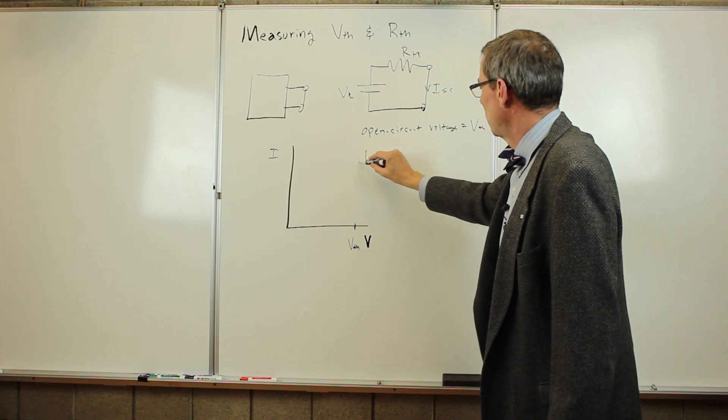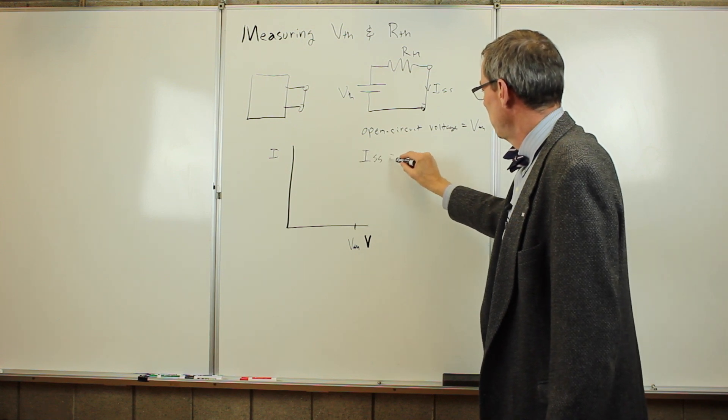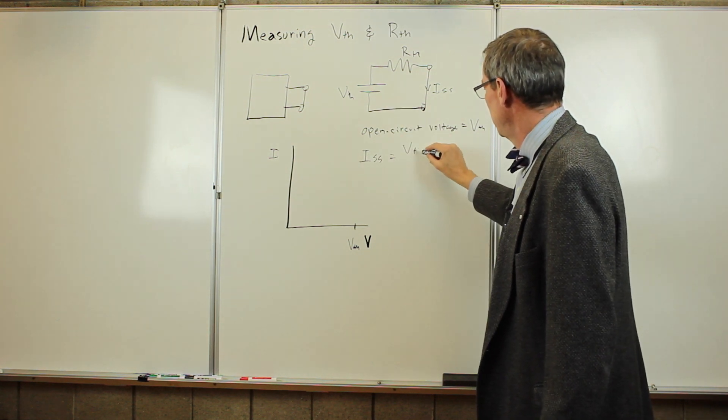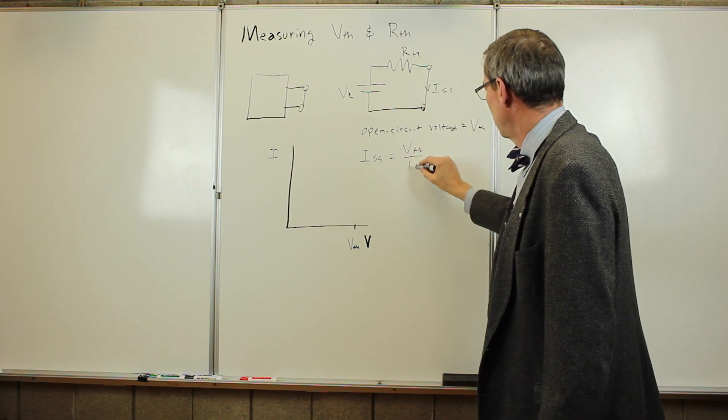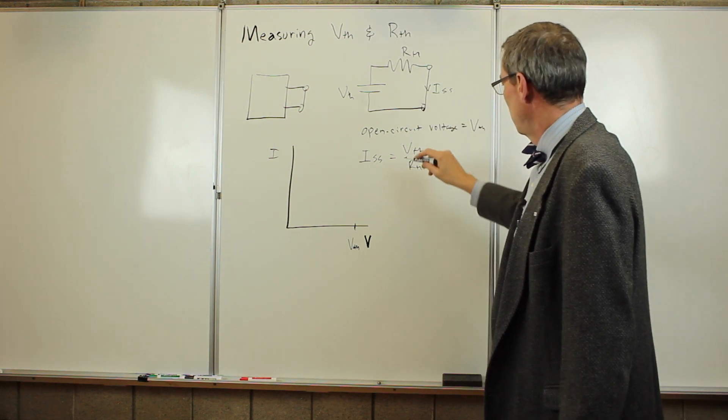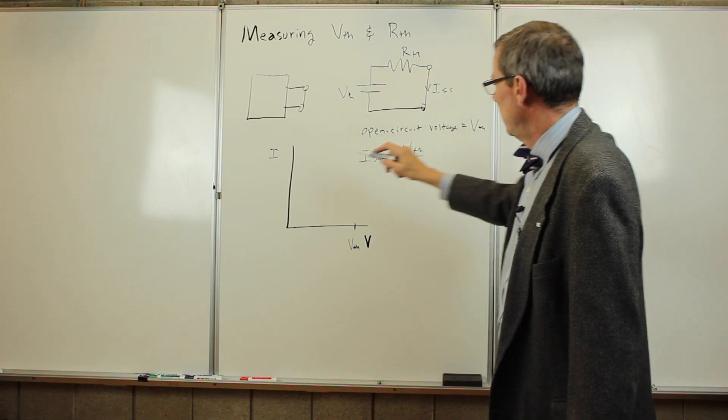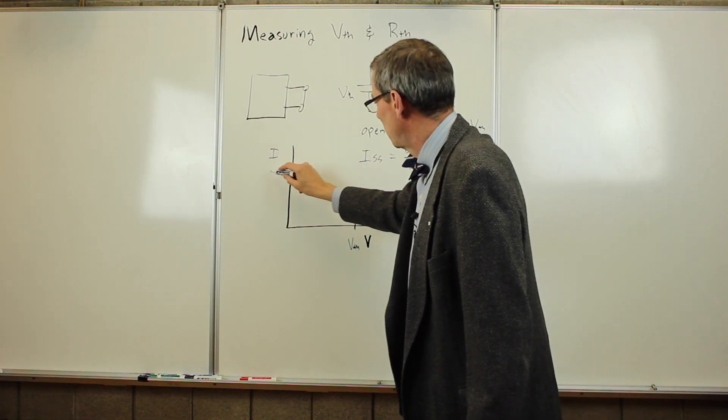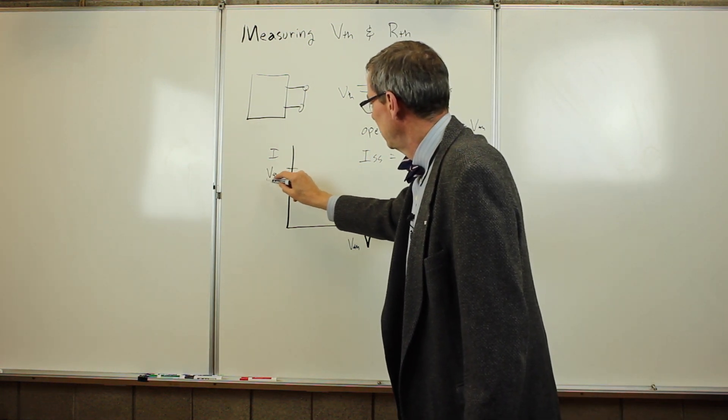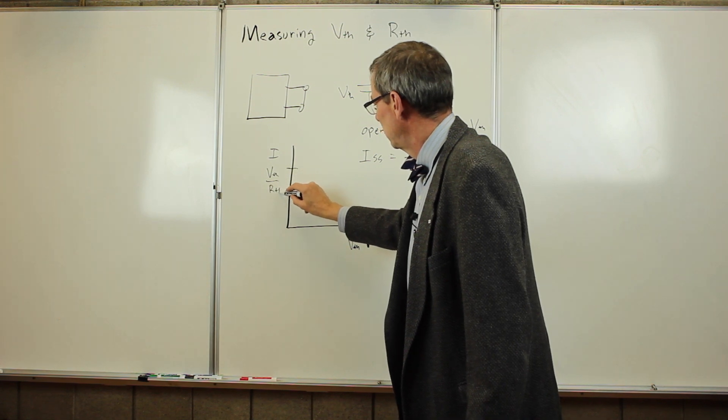And that short circuit current is going to be the voltage, V Thevenin, divided by the resistance, R Thevenin. So that's going to be there and there'll be no voltage here. So we get a point here, this short circuit current, V Thevenin over R Thevenin.